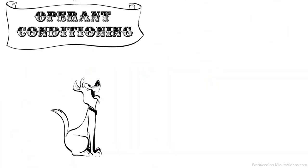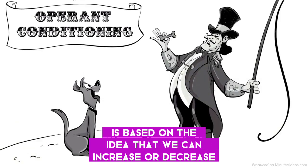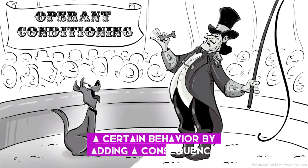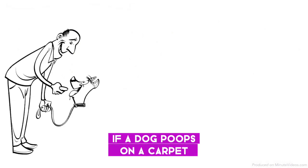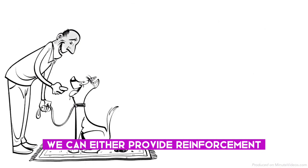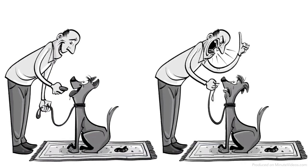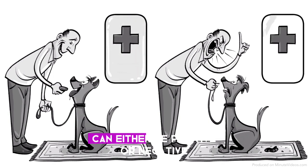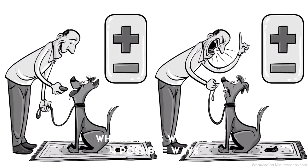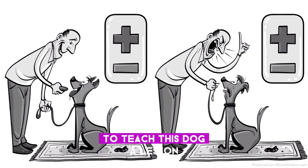Operant conditioning is based on the idea that we can increase or decrease a certain behavior by adding a consequence. For example, if a dog poops on a carpet, we can either provide reinforcement so the dog does it again, or punishment so the dog stops. Both reinforcement and punishment can either be positive or negative, which means we have four possible ways to teach this dog a lesson.